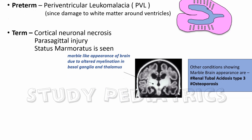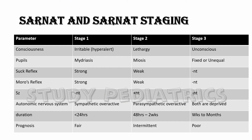Now let's see the staging of HIE. According to Sarnat and Sarnat, there are three stages. Stage 1 involves a hyperalert child, i.e. sympathetic overdrive. In stage 2, the child is lethargic. And in stage 3, the child is comatose.